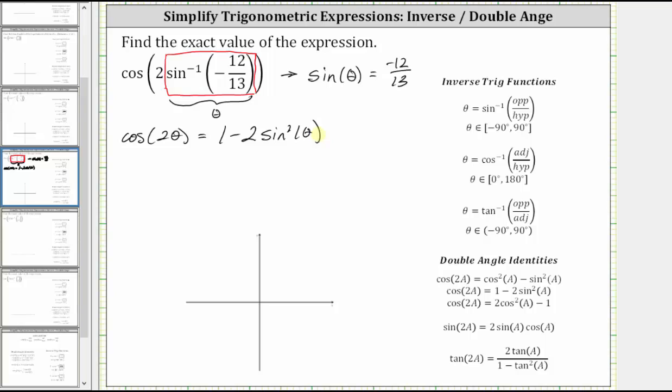So in previous examples, we had to model the angle theta on the coordinate plane, then complete the reference triangle to determine the trig function value of the double angle. In this case, there's no need to, because we already know that sine theta is equal to negative 12 thirteenths.